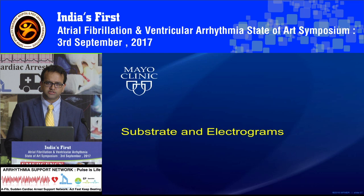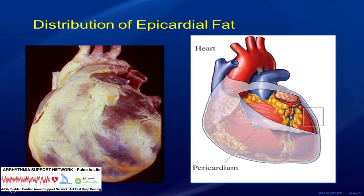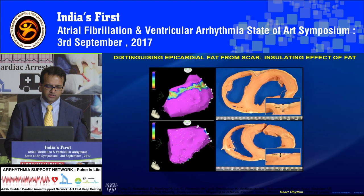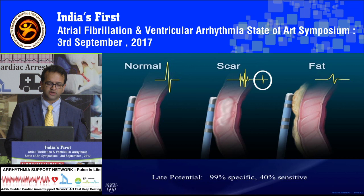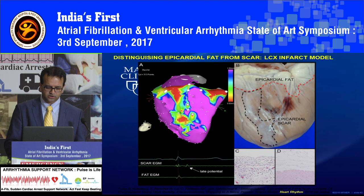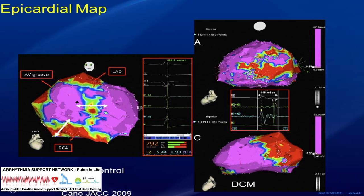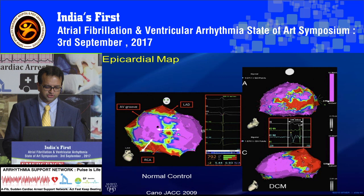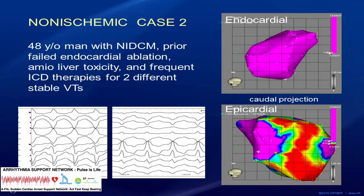Once inside the space, how do you know what to ablate? There is a lot of fat, and fat doesn't conduct electricity, making substrate identification challenging. In arrhythmogenic RV dysplasia, for example, both endocardial and epicardial voltage maps can appear completely normal. When you place your catheter on normal myocardium, you get a normal-looking electrogram. In scar tissue, you get fractionation and delayed potentials. Over fat, signals appear skewed and far-field because fat doesn't conduct electricity and the electrode is picking up signals from distant tissue. As you ablate, you build a voltage map — all the low-voltage areas are identified, and the fat distribution helps guide where to ablate and where not to ablate.